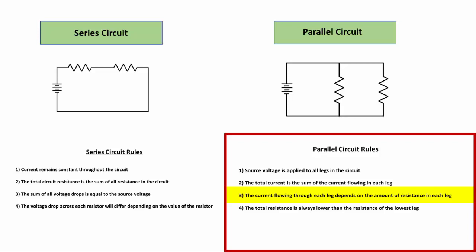If the first resistor is a different value than the second, the current flowing in each branch would be different. If the two resistors are the same value, the current in each branch would be the same, and they still add up to form the total current. Rule four states that the total resistance is always lower than the resistance of the lowest leg. For example, if one resistor is 6 ohms and another is 4 ohms, the total resistance would be lower than 4 ohms.